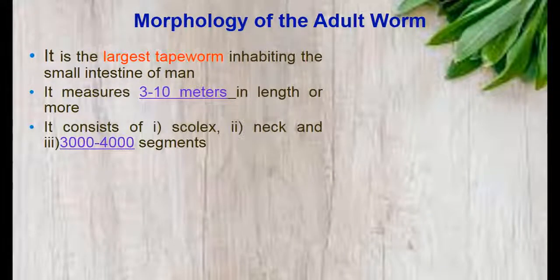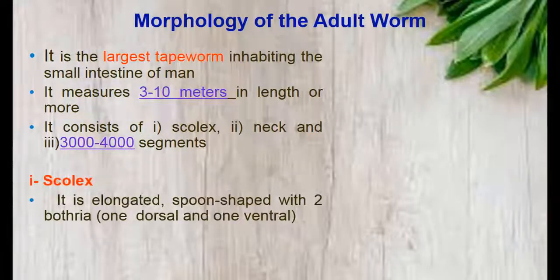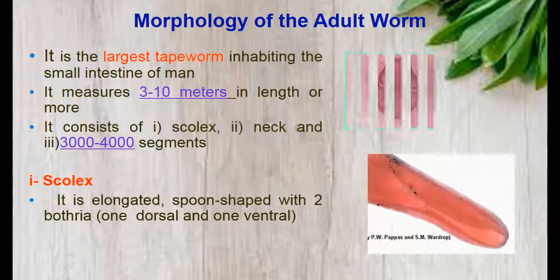Regarding morphology of the adult, it is the largest tapeworm inhabiting the small intestine of man, measuring 3 to 10 meters in length or more. It consists of a scolex, neck, and segments, with a number of segments from 3,000 to 4,000. The scolex is elongated and spoon-shaped with two bothria — one dorsal and one ventral.